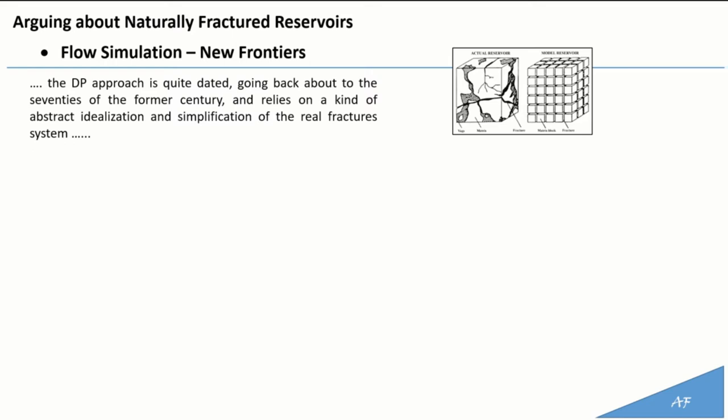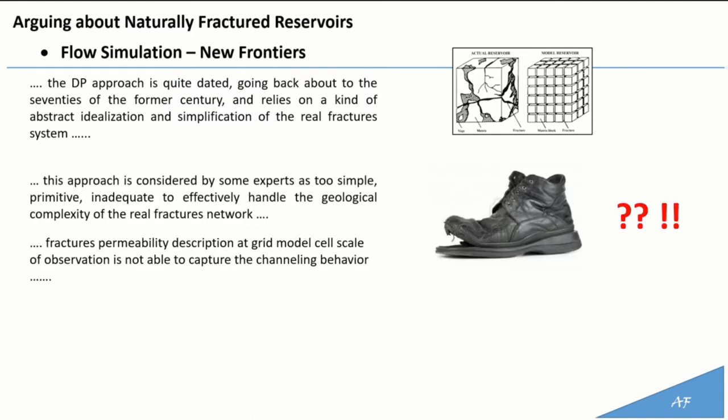The matrix and fractures are treated as separate entities in each cell, where the rock matrix blocks described by a sugar cube geometry are surrounded by the fractures. This approach is considered by some experts as too simple, primitive, and inadequate to effectively handle the geological complexity of the real fracture network. In particular, the fracture permeability description at grid model cell scale, based on upscaling processes like ODA, is considered not adequate for capturing actual fracture connectivity and thus not able to capture the channeling behavior.